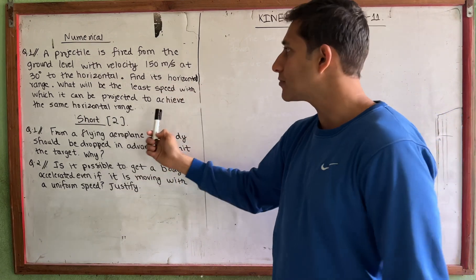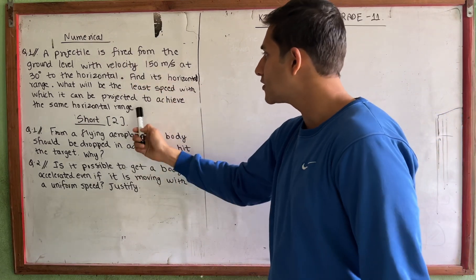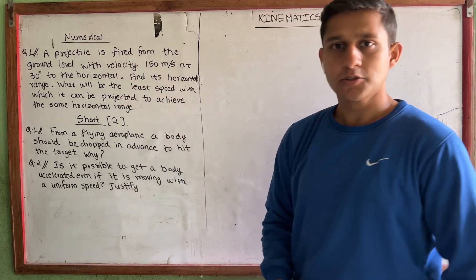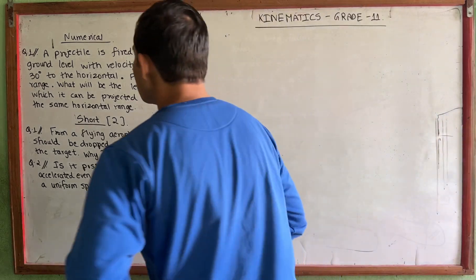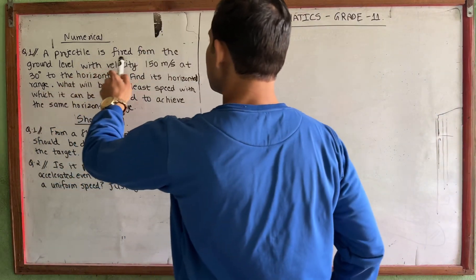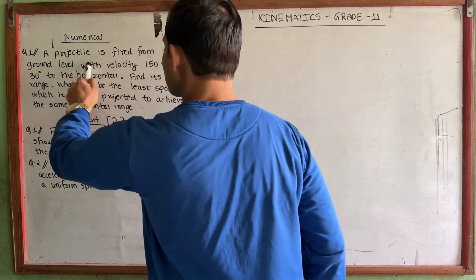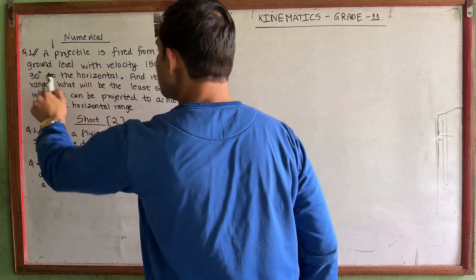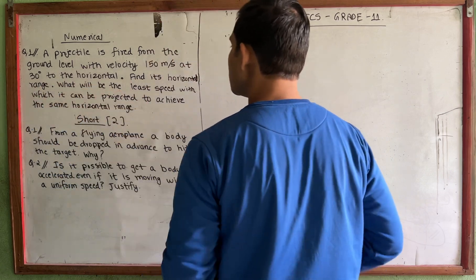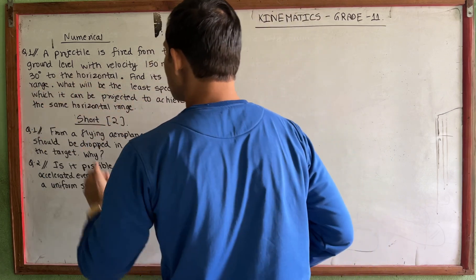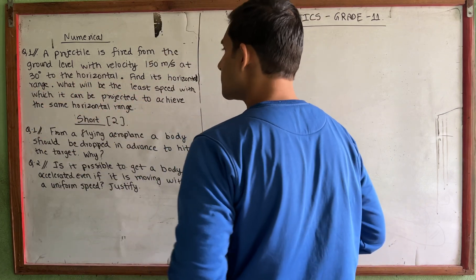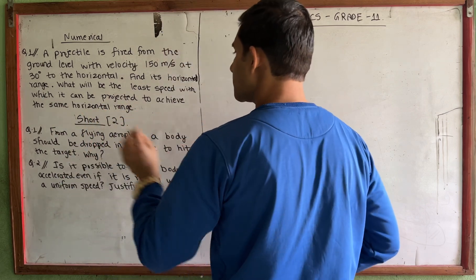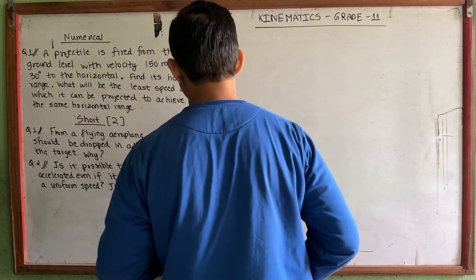This is the least speed question. A projectile is fired from the ground level with velocity 150 meters per second at 30 degrees to the horizontal. Find its horizontal range. What will be the least speed with which it can be projected to achieve the same horizontal range?